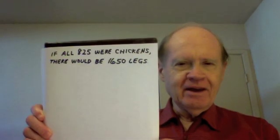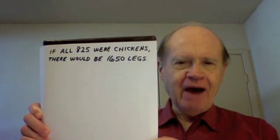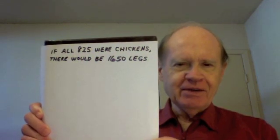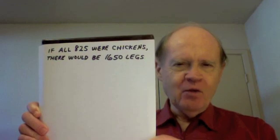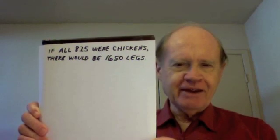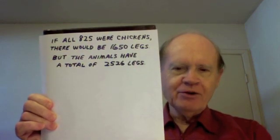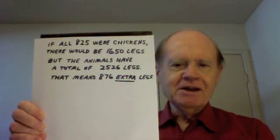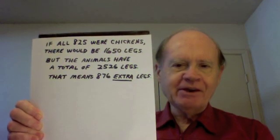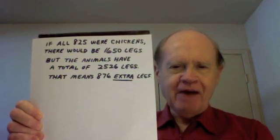Now here's a non-algebraic solution for younger solvers or for any solver who does not feel comfortable using algebra. If all 825 of the animals were chickens, each chicken having two legs, there would be 1650 legs. But the animals have a total of 2526 legs, so subtracting 1650 from 2526...